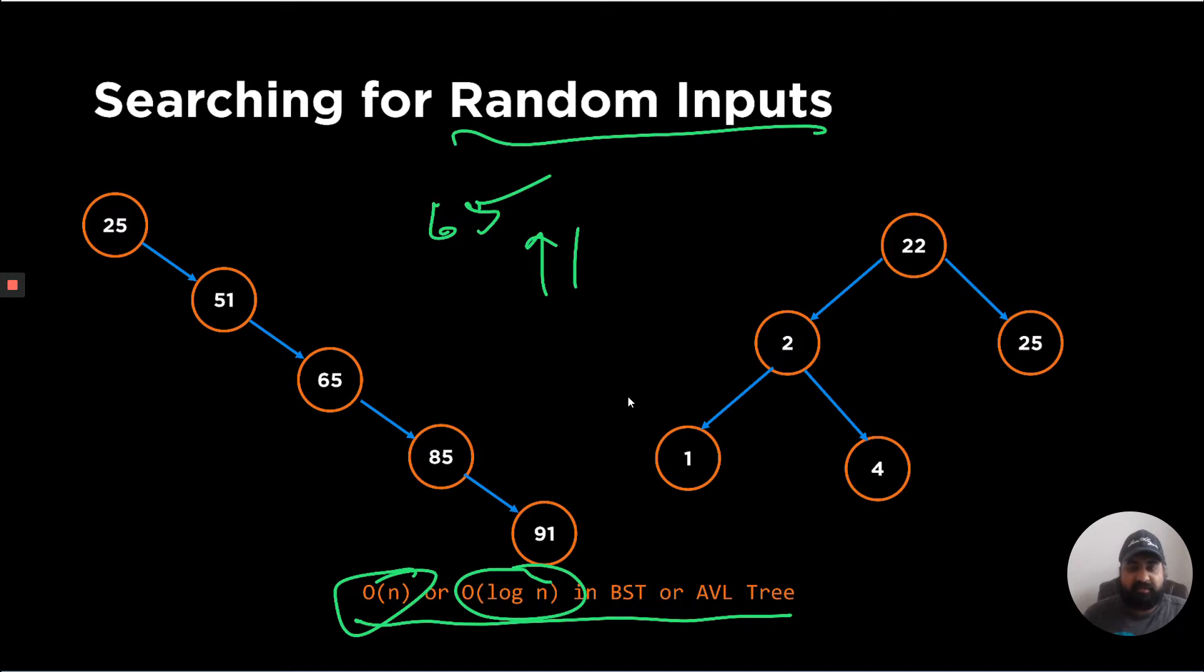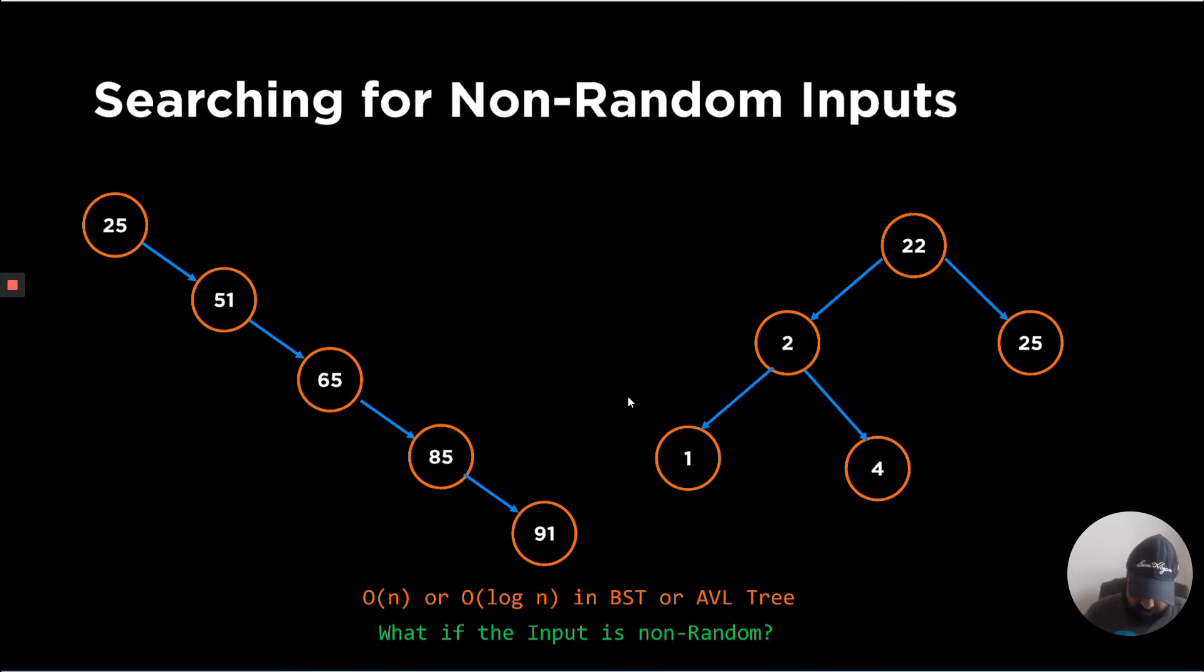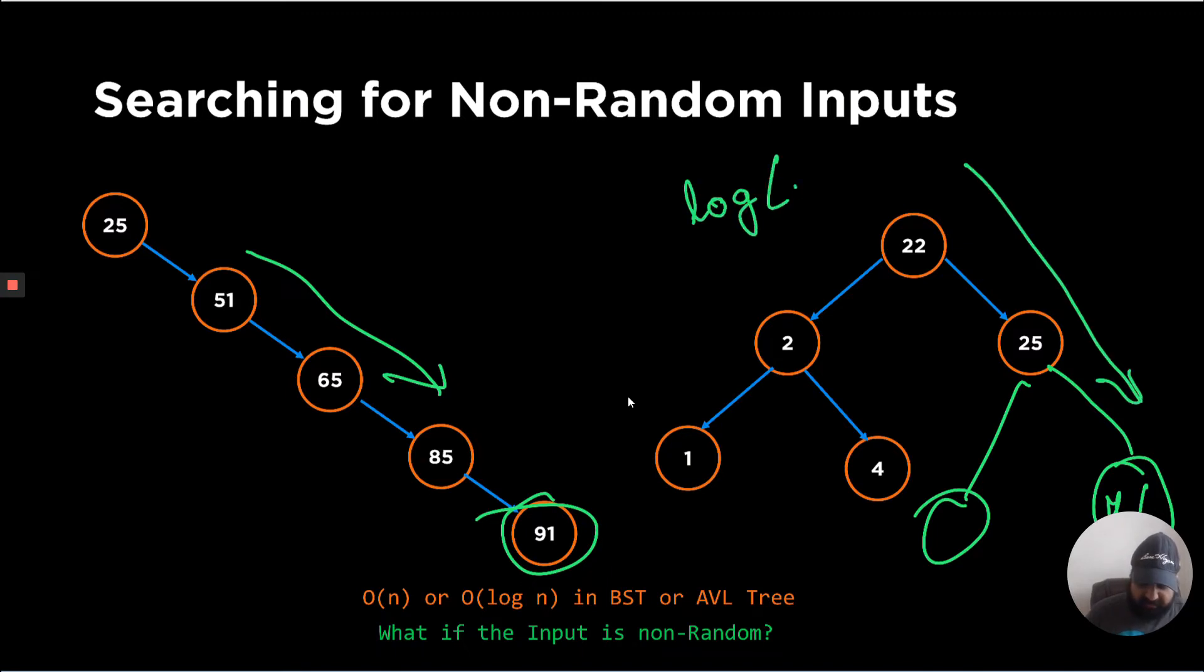But what if there is a specific use case where the inputs are not random? Let's say if you are trying to search a value repeatedly, like if we try to find this value, which is 91 in this case, again and again in this BST or even if it was in an AVL tree. Let's say if this was further down this AVL tree somewhere, we don't know where it was, but it was much deeper. So you still have to traverse and achieve log N complexity. So the question to ask is, can we do better than this?